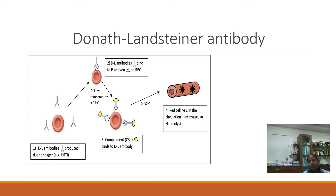This is a diagrammatic representation. The DL antibodies are produced in response to any viral infection — could be a common upper respiratory tract infection like measles, or some flu syndrome, mumps, etc. At low temperatures, below 37 degrees Celsius, the DL antibodies bind to the P antigen present on the RBCs. Then complement C3D binds to this DL antibody-antigen complex, and when exposed to 37 degrees Celsius, intravascular red cell lysis occurs.